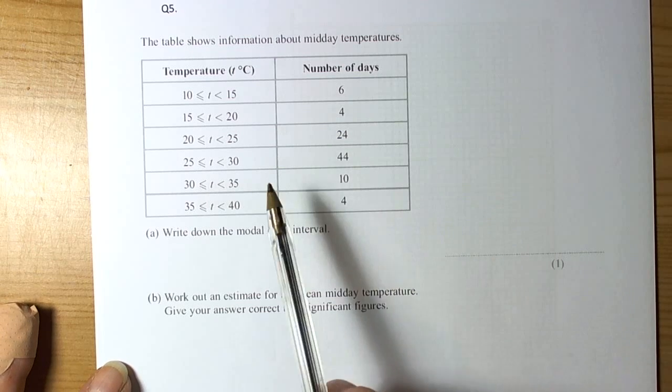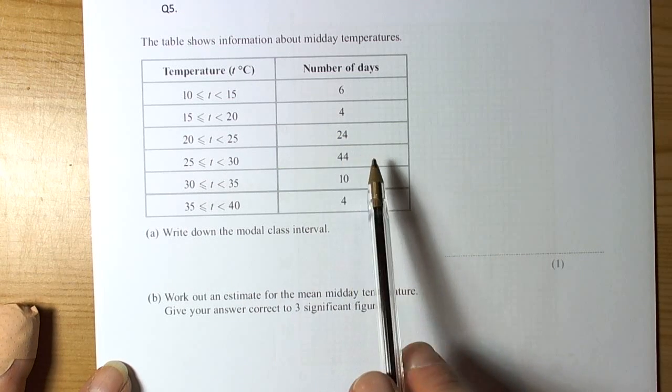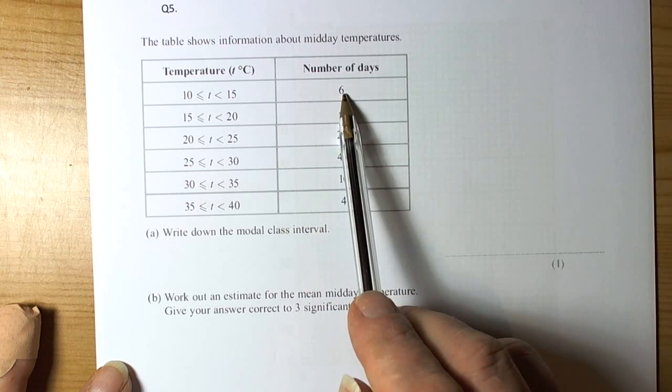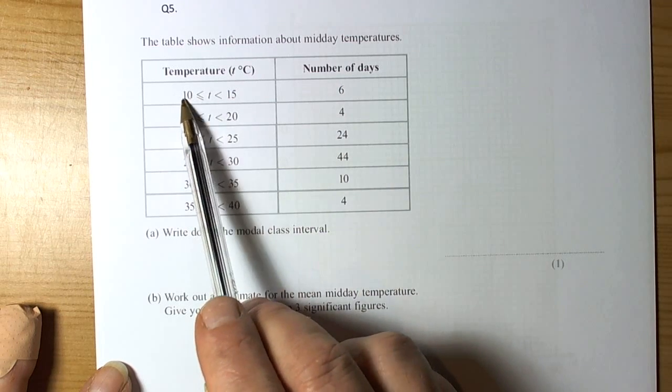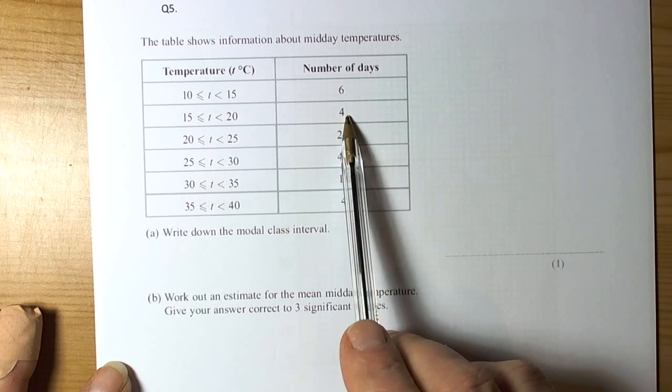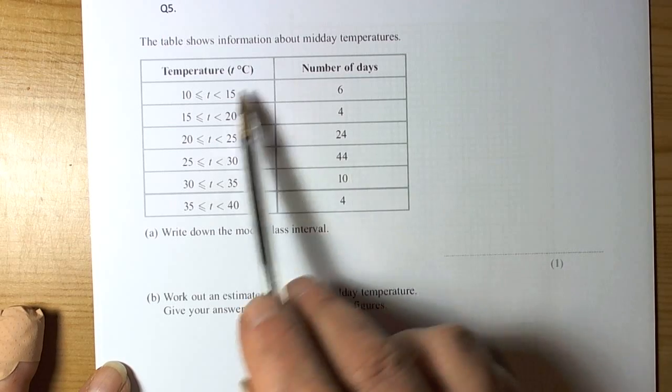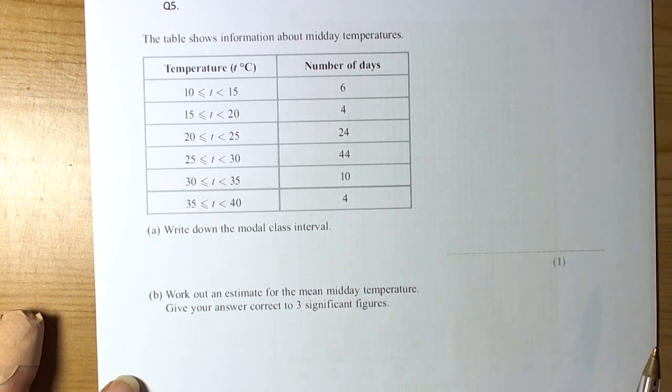Okay, so this question talks about data put into a grouped table. This is saying basically that on six days the temperatures were between 10 and 15 degrees, and this is four days between 15 and 20 and so forth. So we're going to be able to work with this data and interpret it in that way.